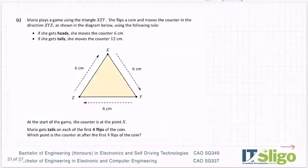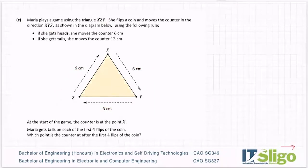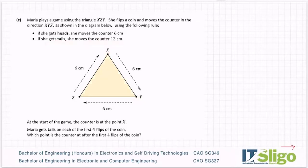Okay, Maria plays a game using the triangle X, Z, Y. She flips a coin and moves the counter in the direction X, Y, Z. They're trying to confuse us by changing the letters. Using the following rule: she flips the coin — if she gets heads, she moves the counter 6 centimeters, so one move. If she gets tails, she moves the counter 12 centimeters, so two moves. At the start of the game the counter is at X.